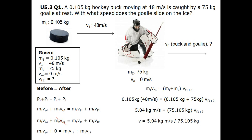To find the final velocity, we divide: 5.04 kg·m/s divided by 75.105 kg. The kilograms cancel out and we are left with a final velocity of 0.067 meters per second, rounded to three decimal places. And that's how you get your answer.